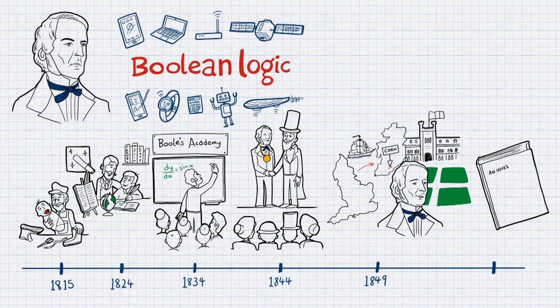In 1854, he wrote The Laws of Thought, which described his theories of logic and algebra.